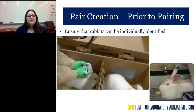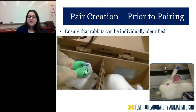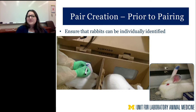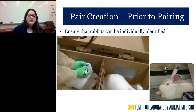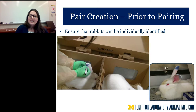Also prior to pairing, ensure rabbits can be individually identified — this allows accurate tracking of behaviors to understand the dominance hierarchy. Use a blue or purple non-toxic, animal-safe marker to mark the tips of their ears. We avoid red or orange as they can be confused for bodily fluids. Blue works best — it's clearly visible from across the room, and marking the ear tips makes it harder for the rabbits to groom off.